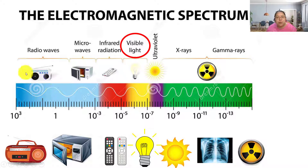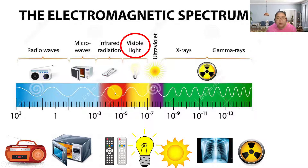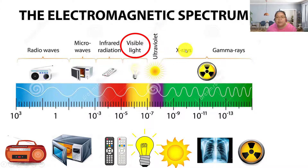Let me introduce the spectrum one by one. For the lowest frequency and highest wavelength, that's the radio wave, followed by microwave, then infrared. The circled part in the middle is the visible light — the light of the rainbow that we can see. The rainbow starts with red color, which is near the infrared. The last rainbow color is violet, which is near the ultraviolet. This part is called visible light.